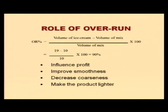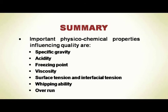Overrun is good because it influences profit — we are giving air, which is free, to consumers in the cost of ice cream, so we make more profit if overrun is higher. It improves smoothness because air cells present in the ice cream exert pressure on ice crystals and lactose crystals, preventing them from growing in size, making the ice cream smoother. It also decreases coarseness and makes the product lighter in weight. So from all angles, higher overrun is better because it means more profit, better texture, and a lighter product.